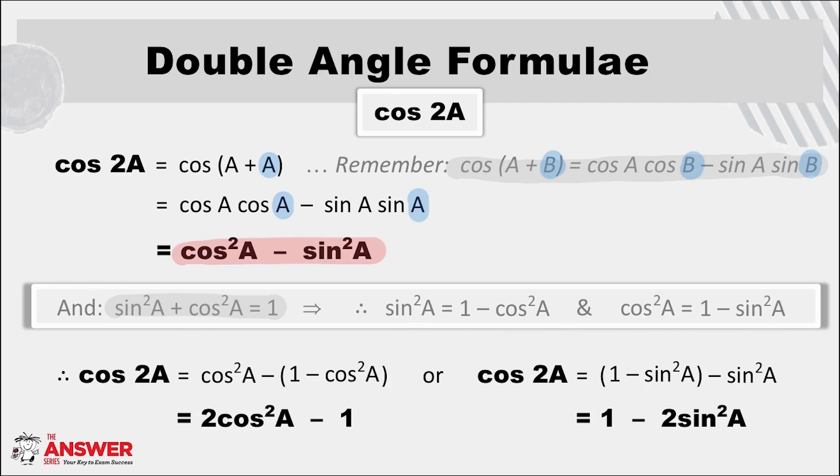So here we can replace sine squared A with one minus cos squared A and then by multiplying out the brackets and watching your signs this simplifies to two cos squared A minus one, a second way to expand cos of a double angle.